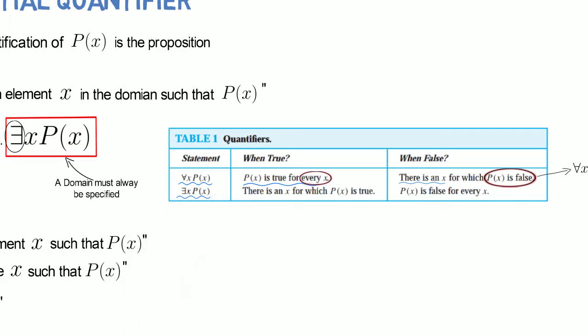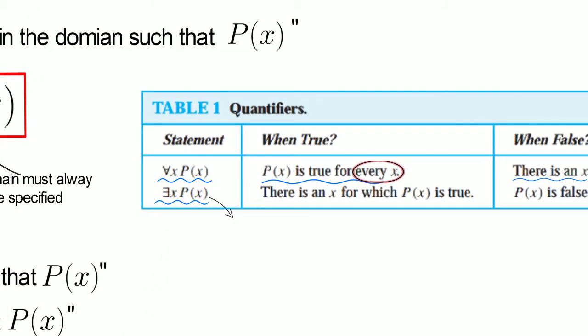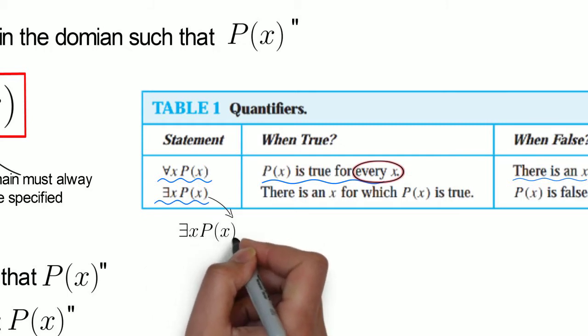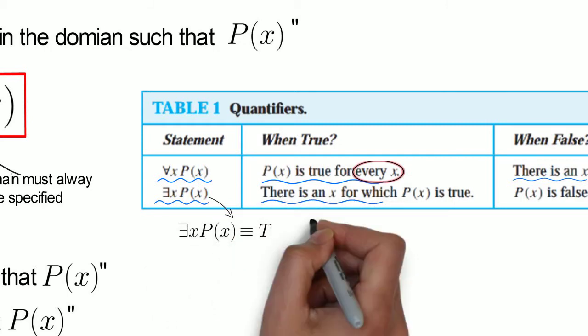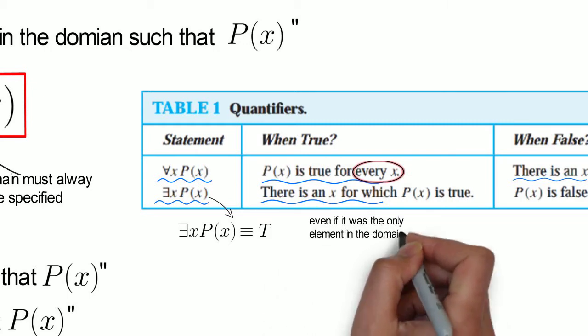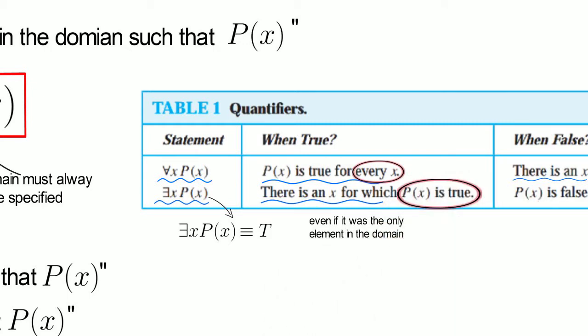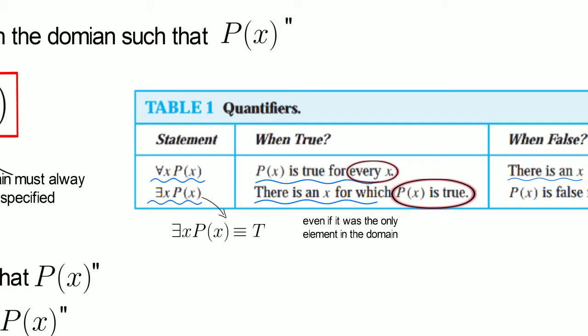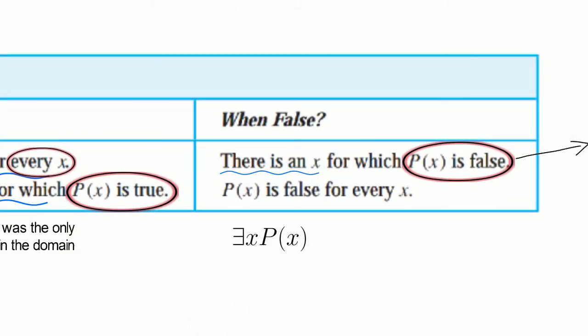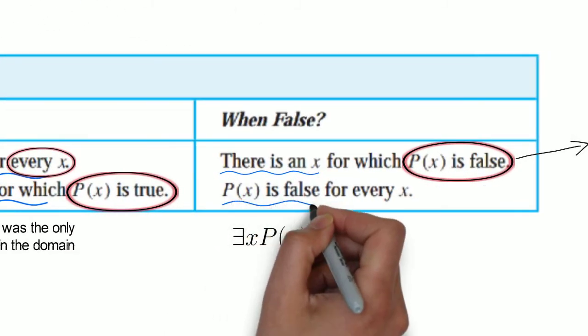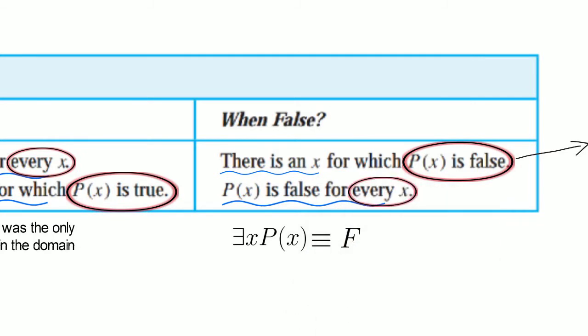In contrast, a statement with the existential quantifier is true if there exists an x, even if it was the only x for which P(x) is true. The statement is false only when P(x) is false for every x in the domain.